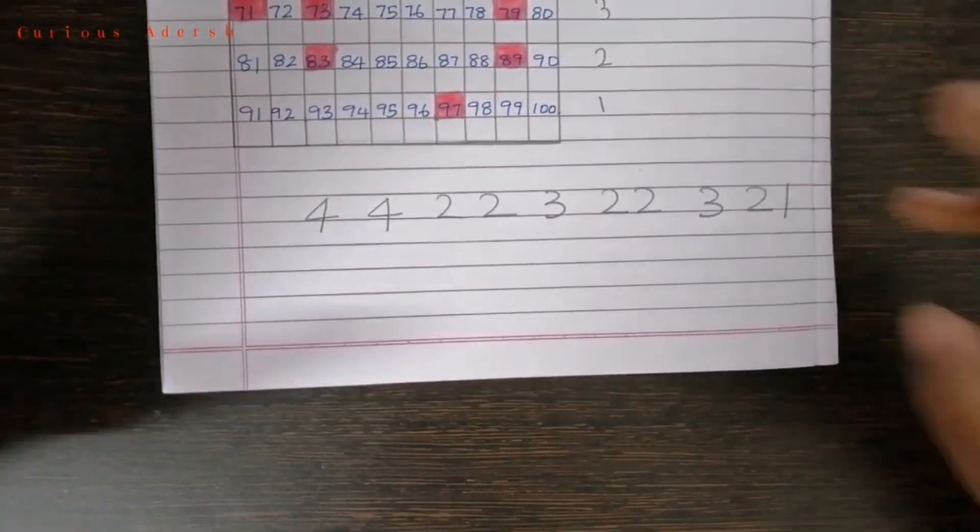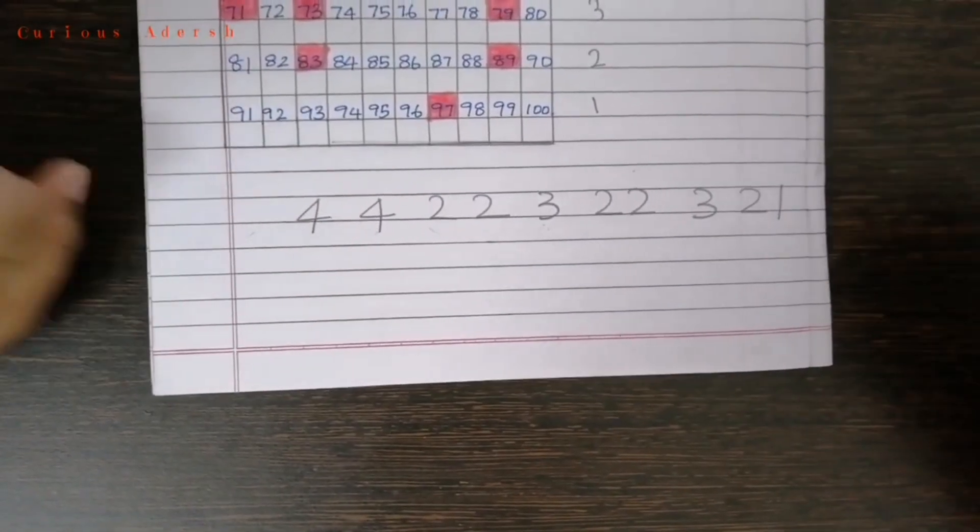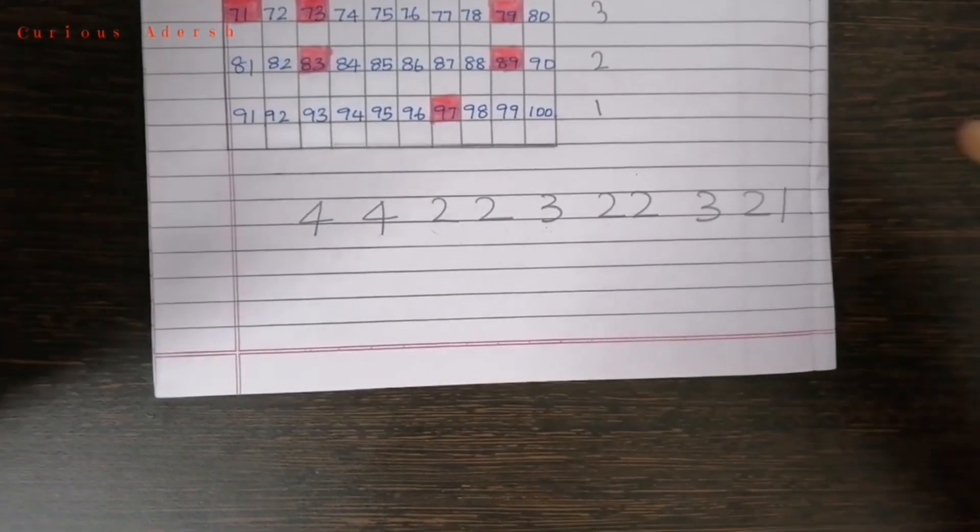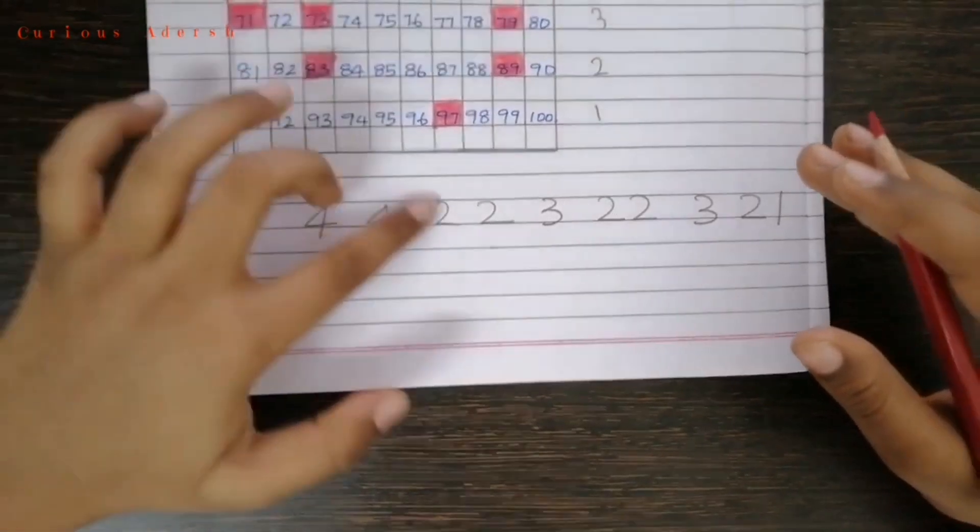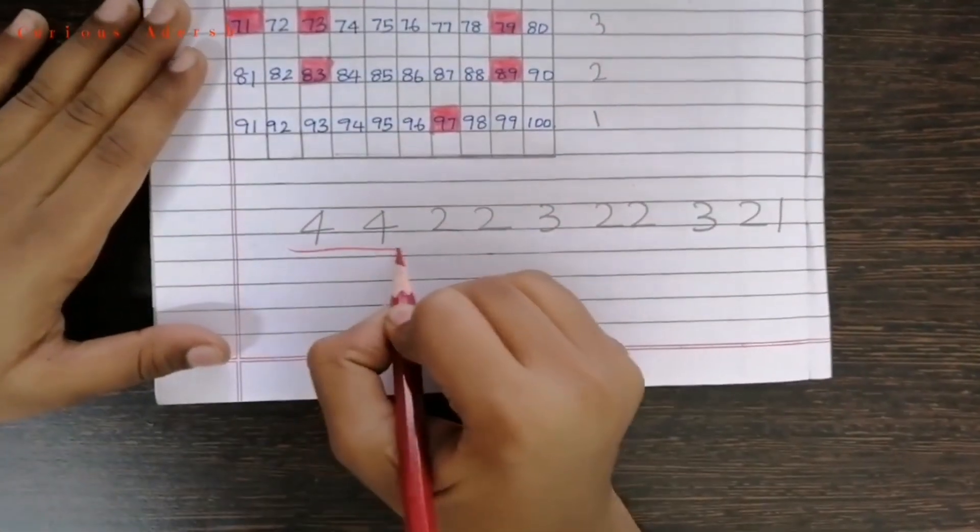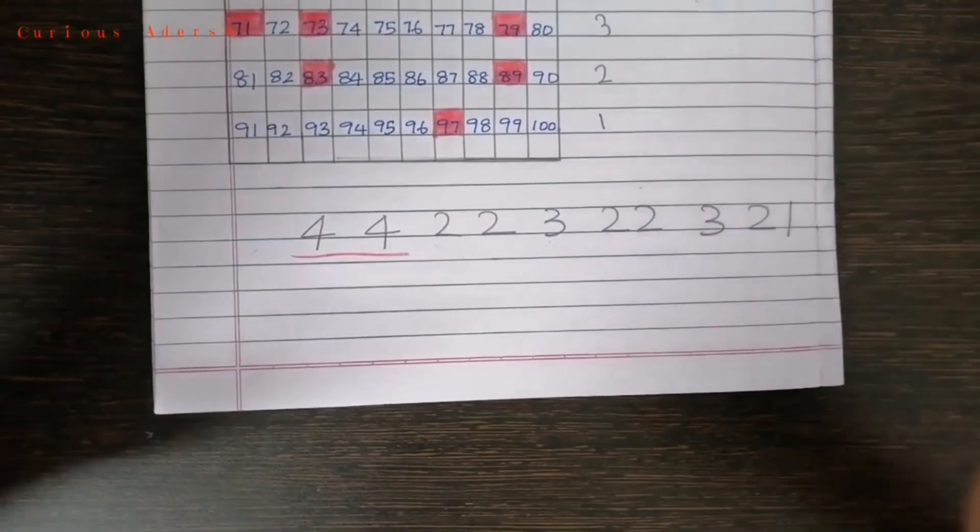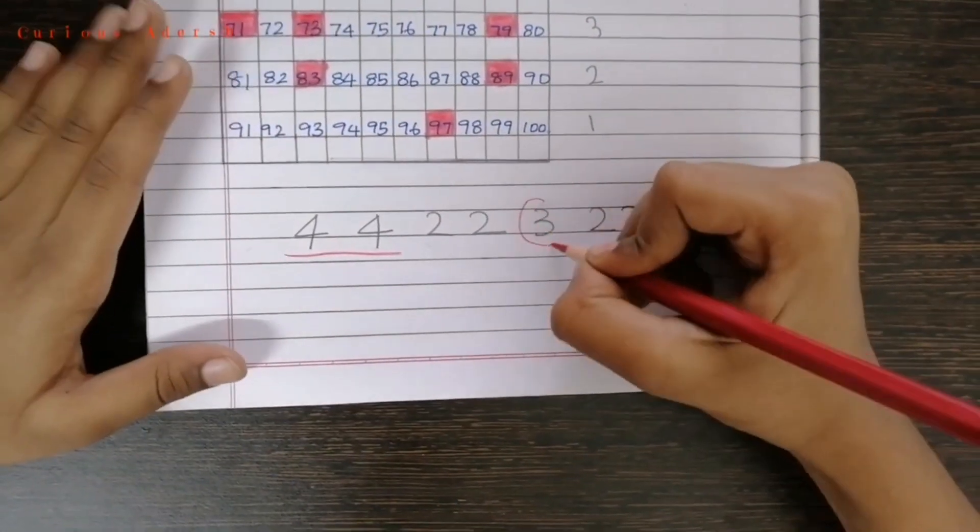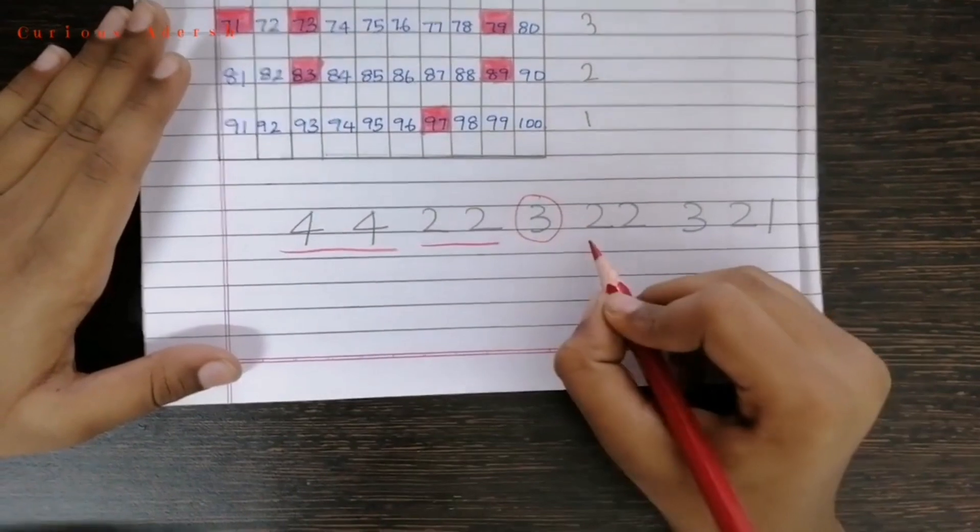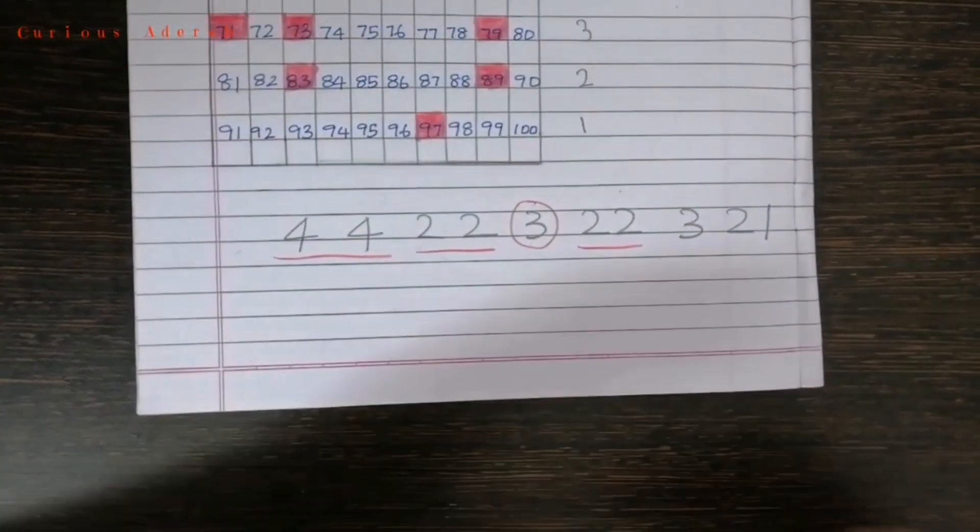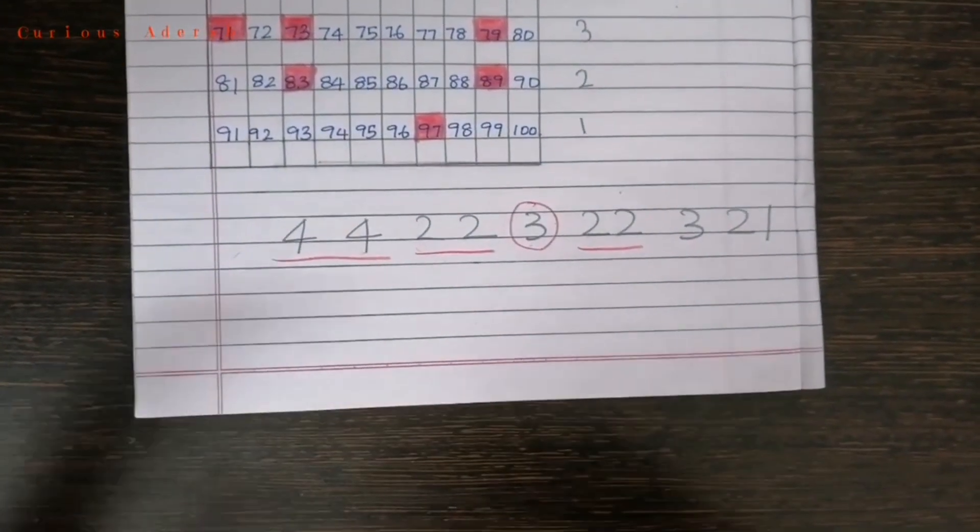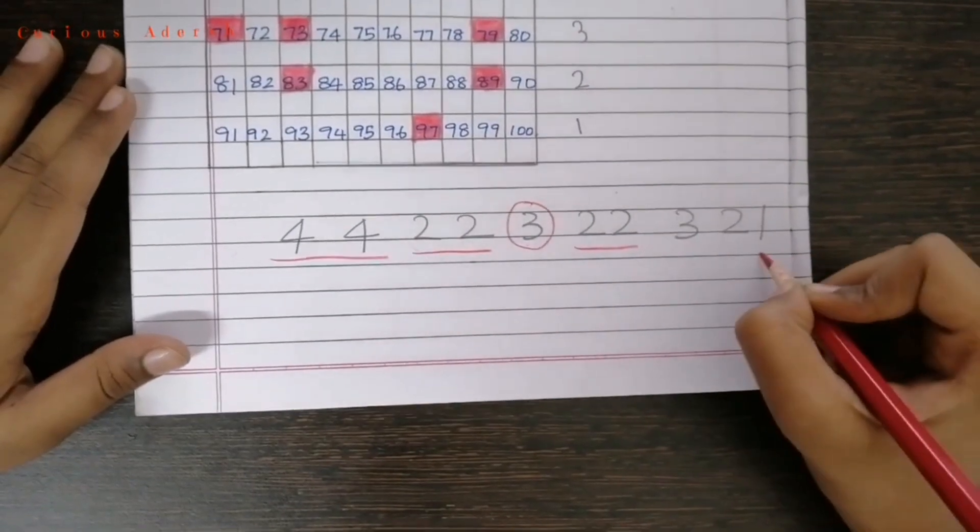Now, let's see how to memorize this number. First, you can always remember the first two numbers. Double 4. Then, imagine a sandwich. 3 is sandwiched between two double twos. And then, the reverse of 1, 2, 3. Which is 3, 2, 1.